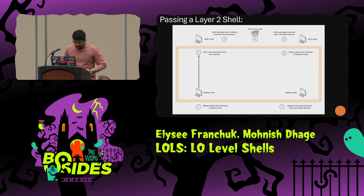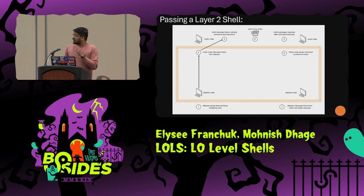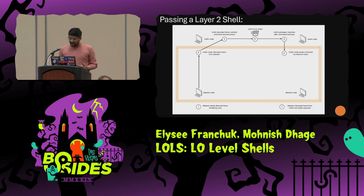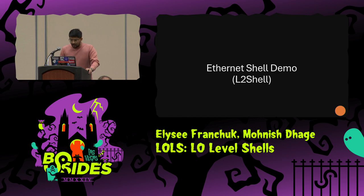Let's take a detailed look at the flow. The attacker starts off by sending Ethernet frames containing the command. The victim node then decodes the frames, extracts the command, and executes it. Once the command is executed, the victim node then again uses Ethernet frames to send the information back to the attacker node.